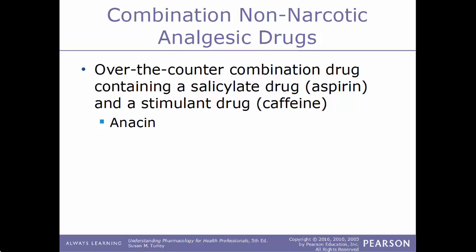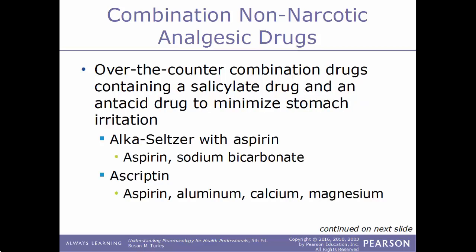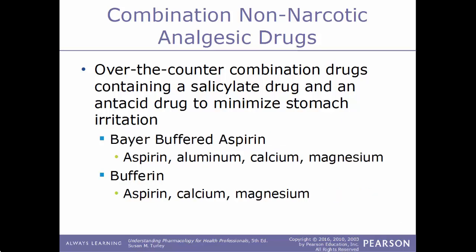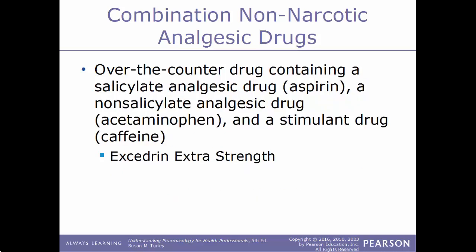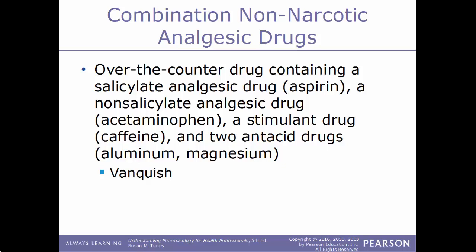Non-narcotic analgesic drugs are often found in combination form. One possible combination is a salicylate drug like aspirin with a stimulant drug such as caffeine — an example is Anacin. Another combination pairs a salicylate drug with an antacid drug to minimize stomach irritation; examples include Alka-Seltzer with aspirin, which combines aspirin and sodium bicarbonate, and Ascriptin, which combines aspirin with aluminum, calcium, and magnesium. Bayer Buffered Aspirin and Bufferin are similar combinations. Yet another type combines aspirin, acetaminophen, and caffeine — an example is Excedrin Extra Strength.